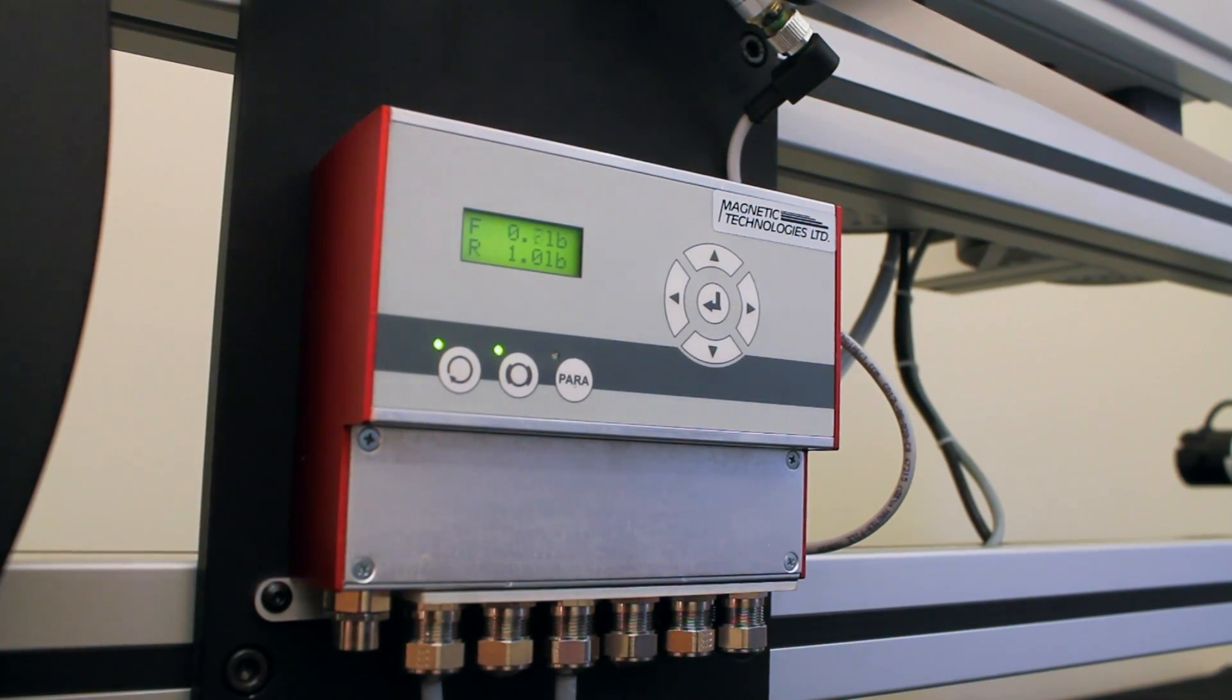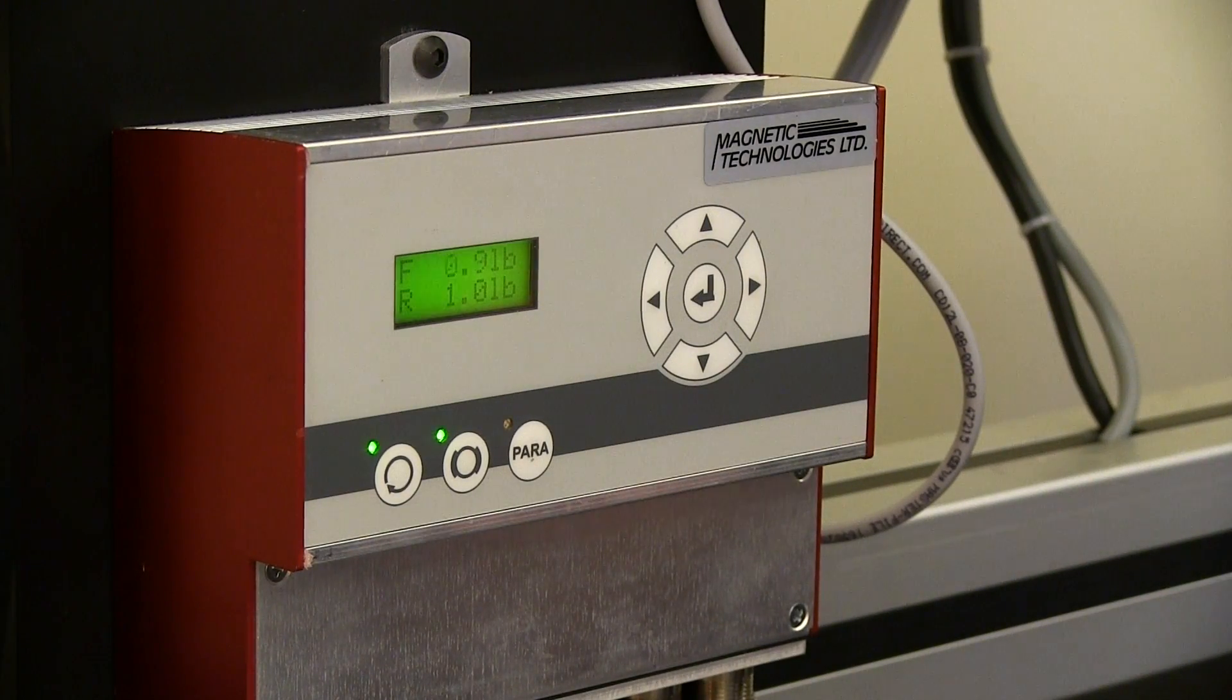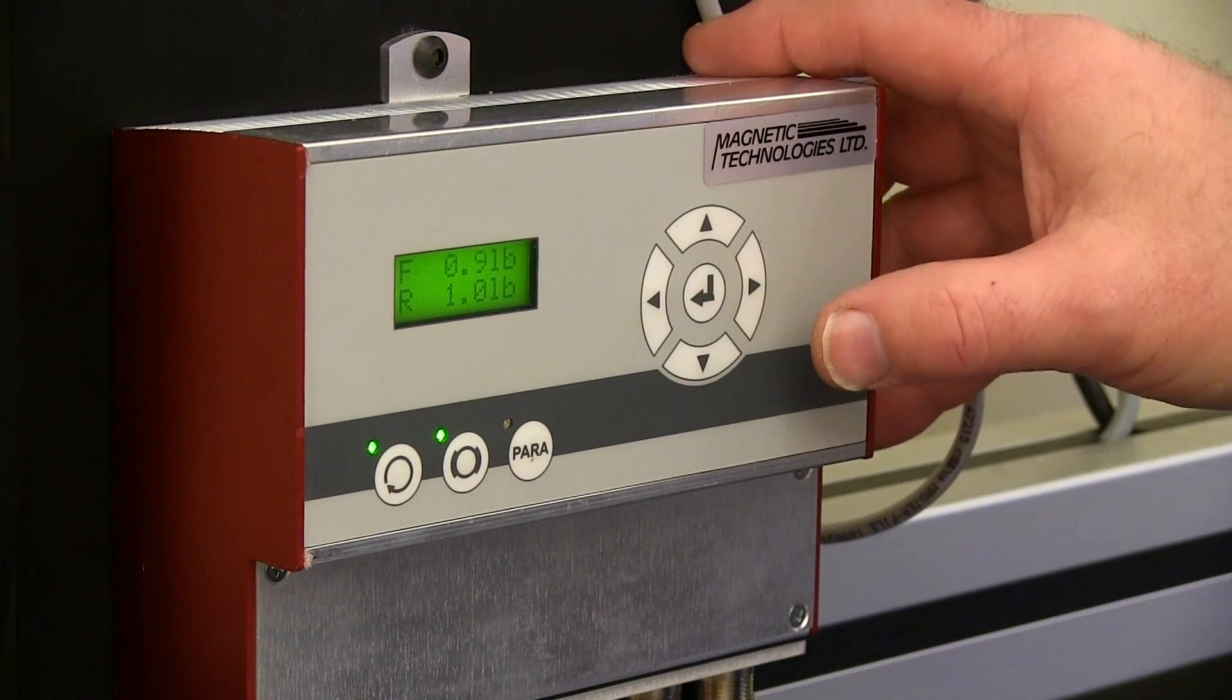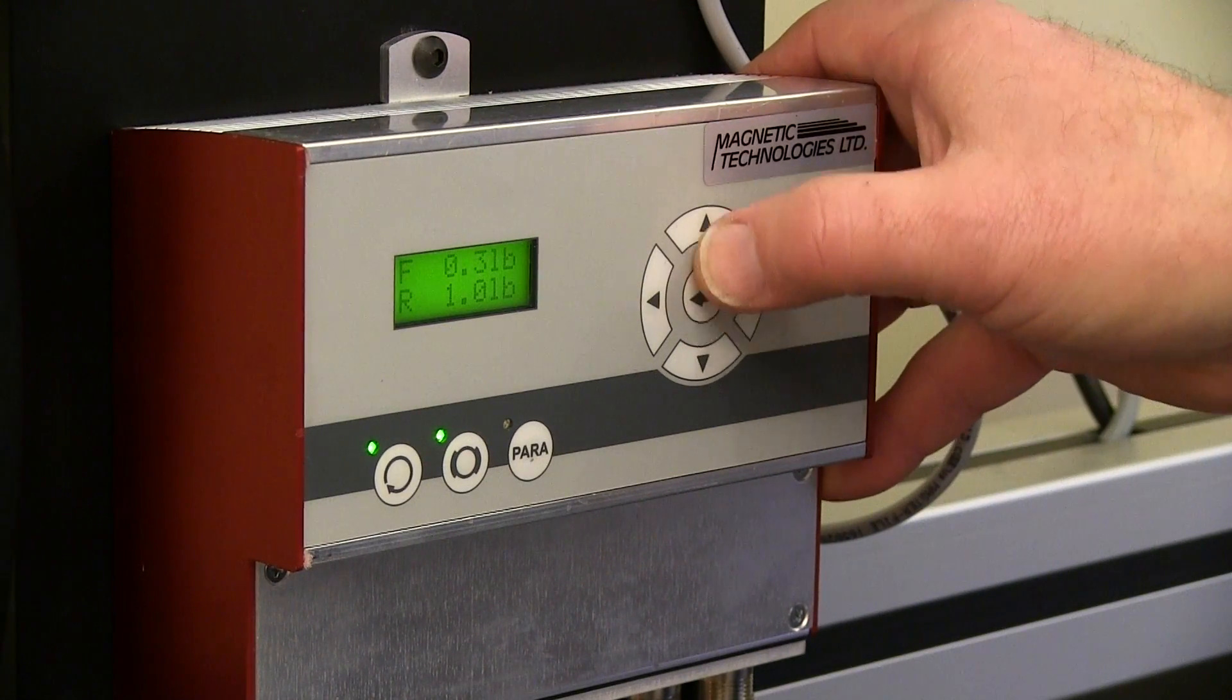In this manner, real-time, closed-loop control of tension is possible. Changes in payoff diameter as well as any variation in the material being paid off is immediately detected and torque to the brake is adjusted accordingly.